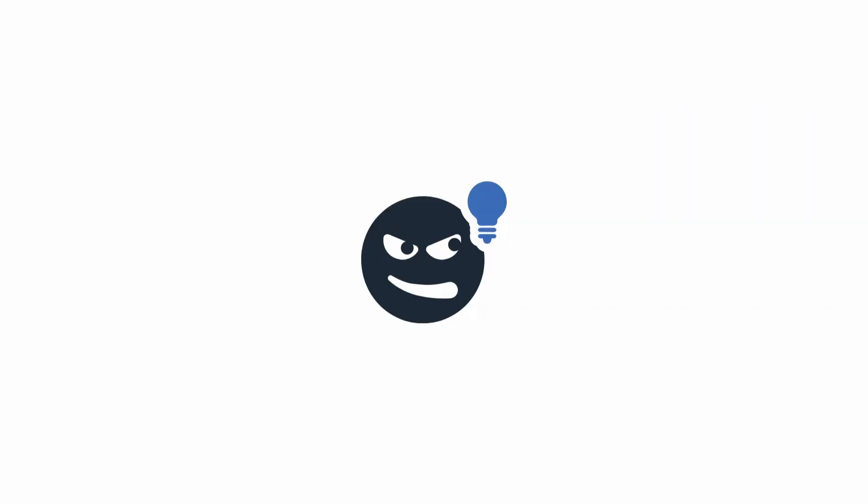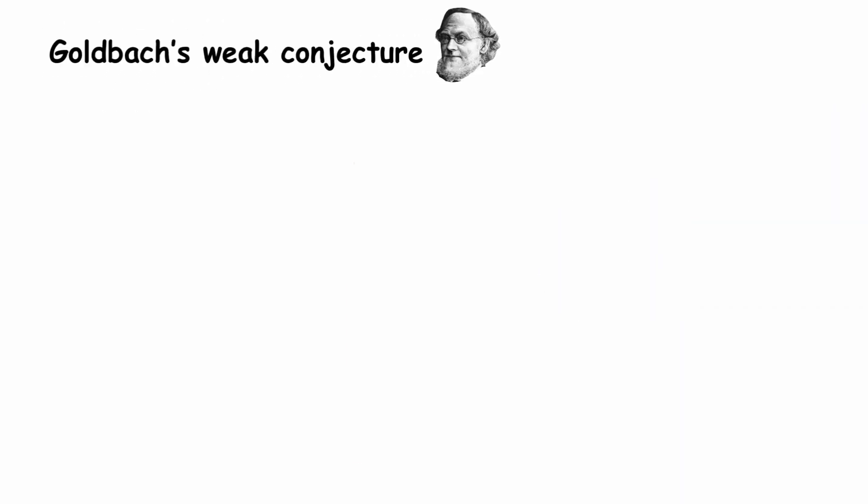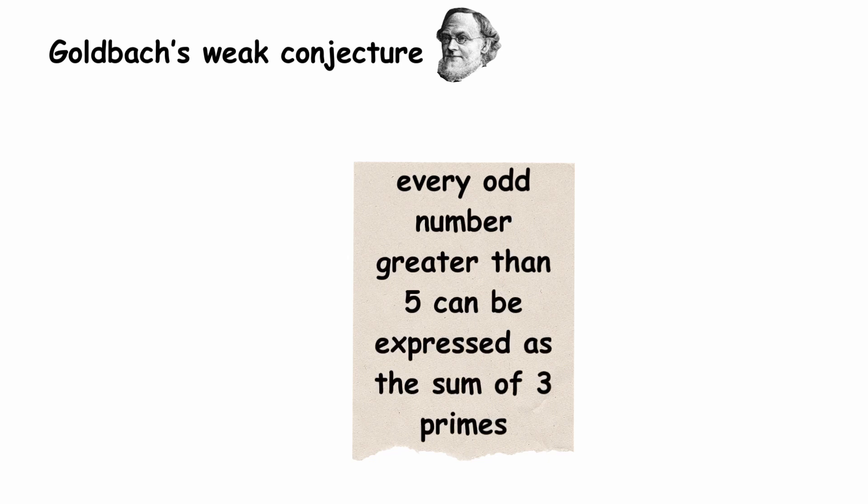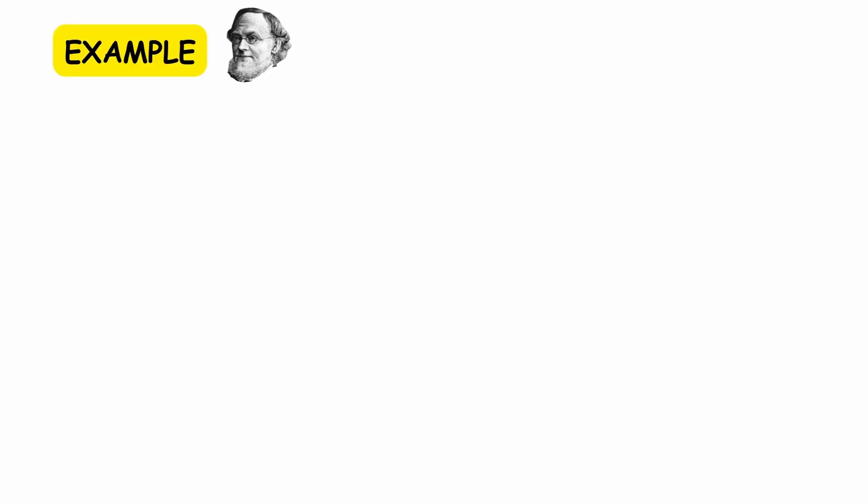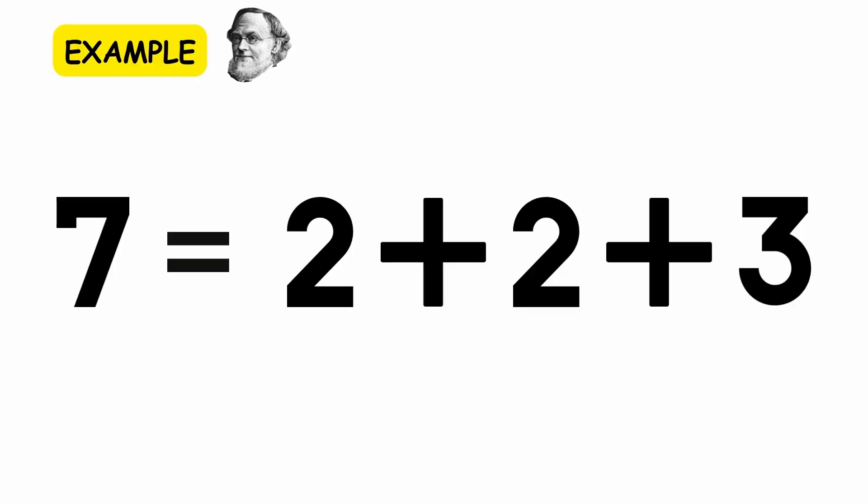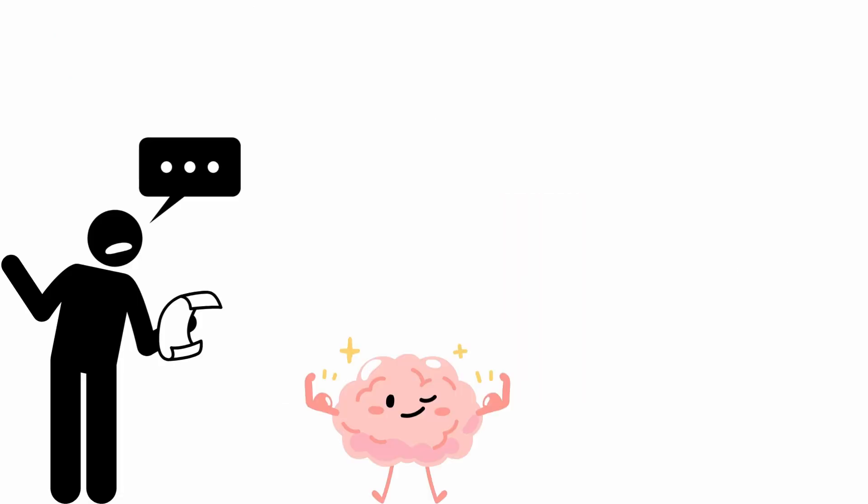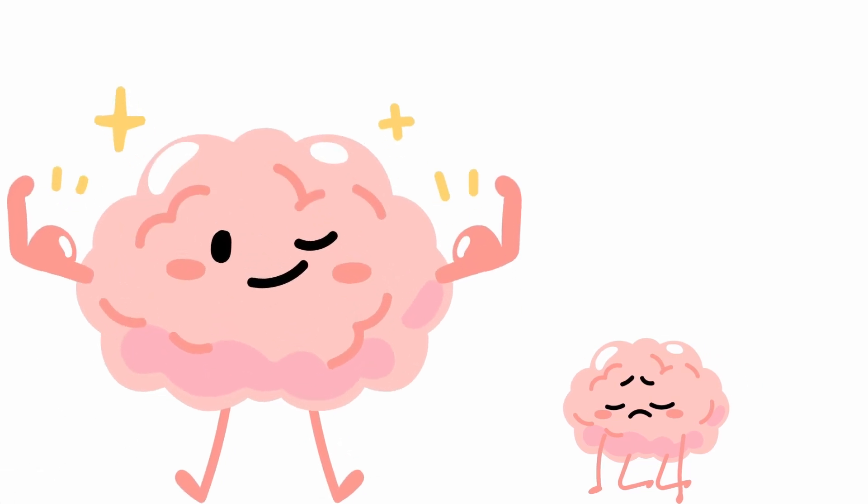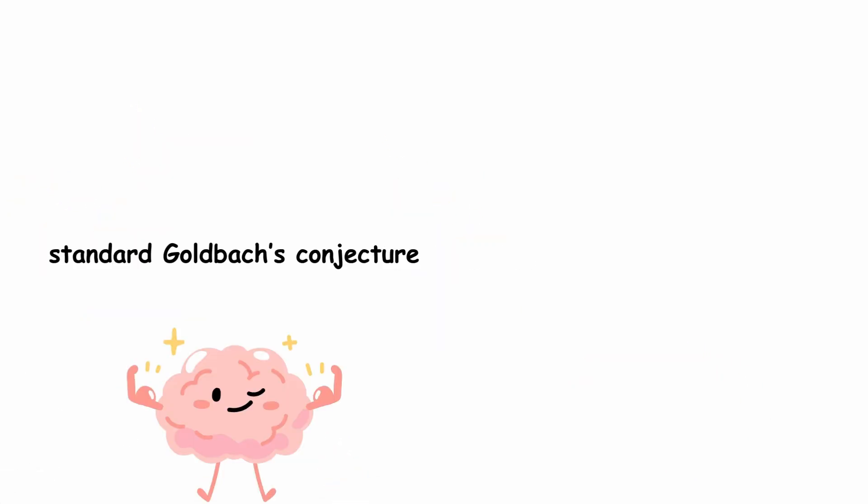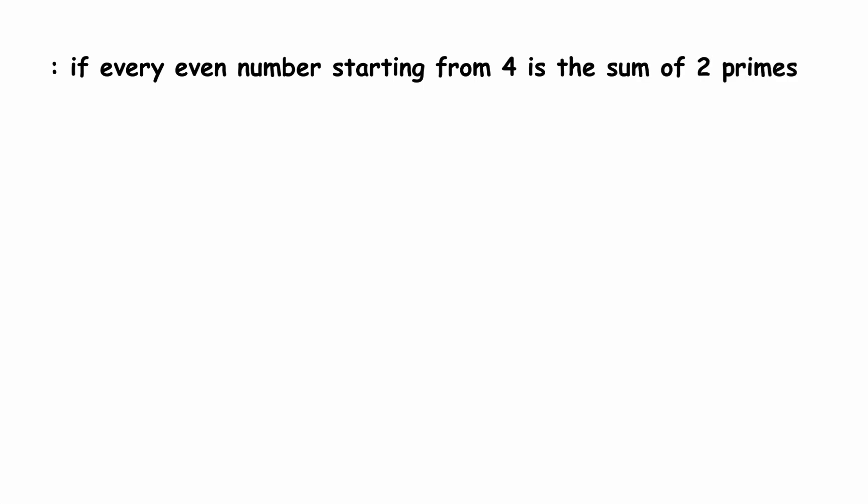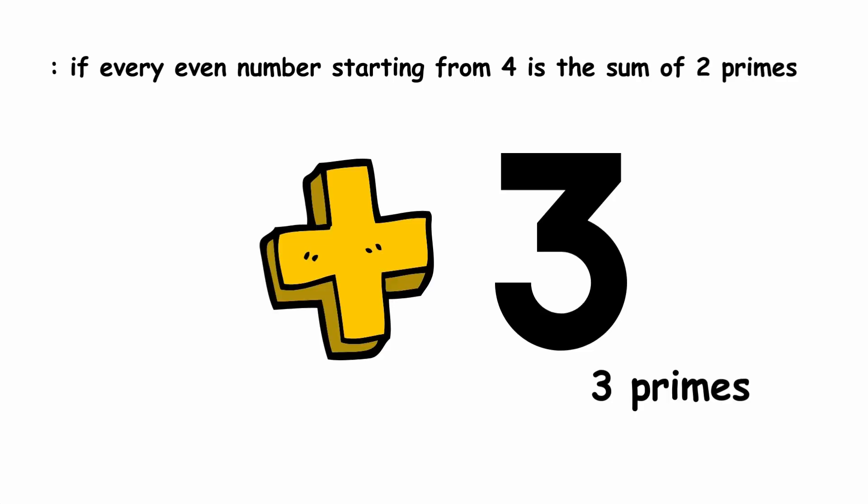There is also a related conjecture, known as Goldbach's Weak Conjecture. It states that every odd number greater than 5 can be expressed as the sum of three primes, not necessarily unique primes. For example, 7 can be expressed as 2 plus 2 plus 3. In mathematics, two statements are called strong and weak with respect to each other if the strong statement immediately implies the weak statement. In our case, the strong statement, the standard Goldbach's Conjecture, would immediately imply Goldbach's Weak Conjecture. If every even number starting from 4 is the sum of two primes, then you can just add 3 to each one to get a sum of 3 primes, producing the odd numbers starting from 7.